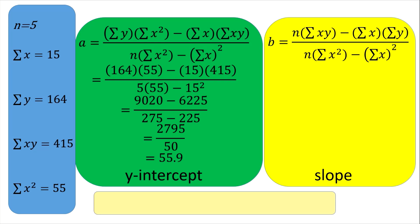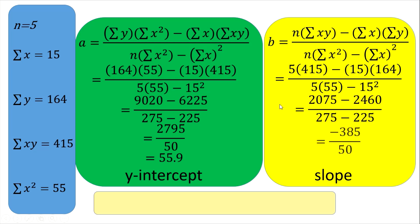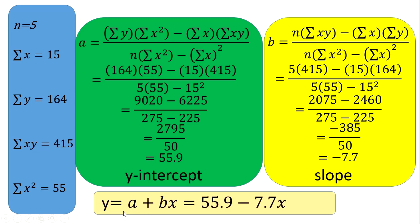For slope b, using the same formula: n times summation of xy — so 5 times 415 — minus summation of x times summation of y: 15 times 164, divided by the same denominator as a. The slope is negative 7.7, meaning the line leans toward the left. Therefore, y equals 55.9 minus 7.7x, with a negative slope.